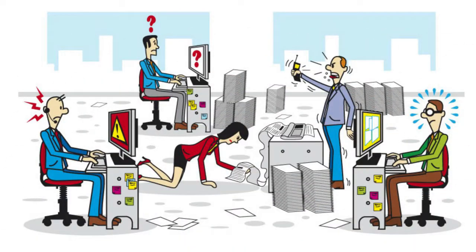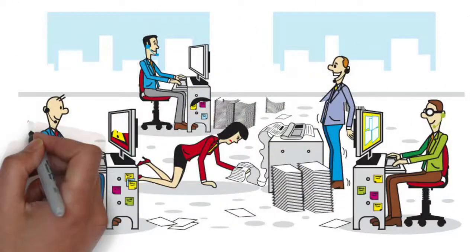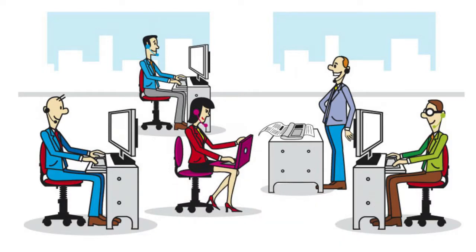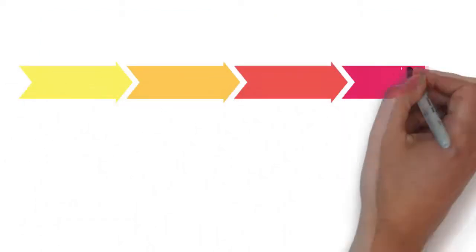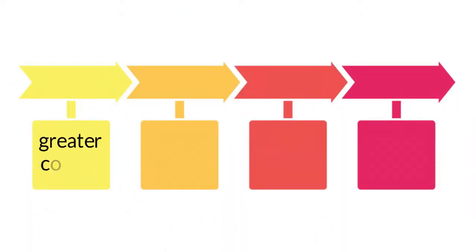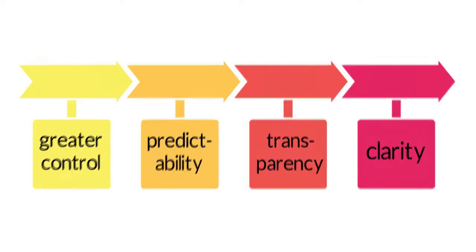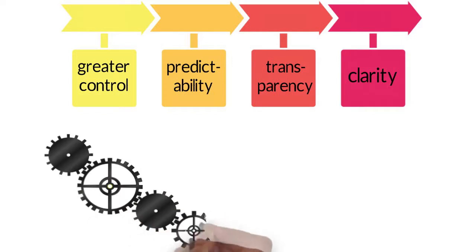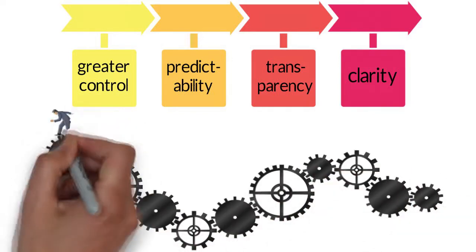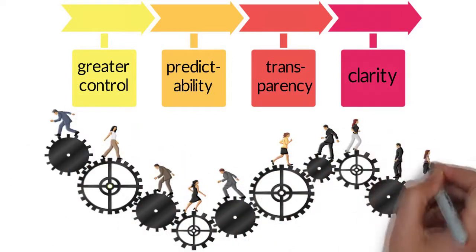Organizational self-management is not a free-for-all, and it doesn't lead to chaos or loss of control. In fact, properly self-managed organizations experience greater control, predictability, transparency, and clarity. Better decision-making, clearer communication, and alignment of everyone's work with the overall mission of the enterprise.